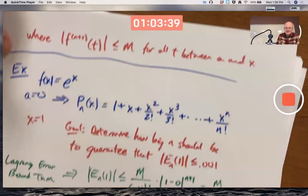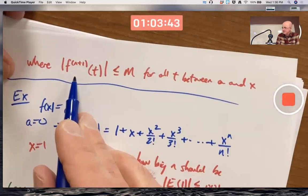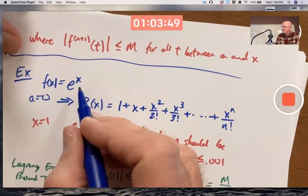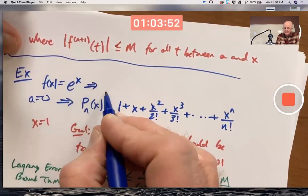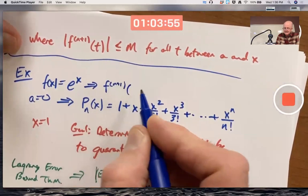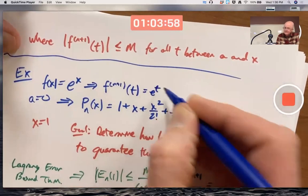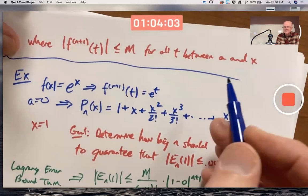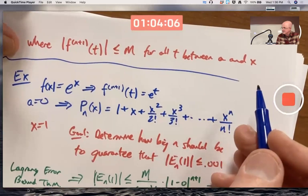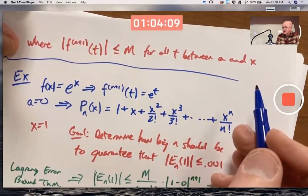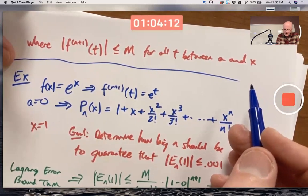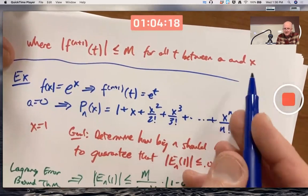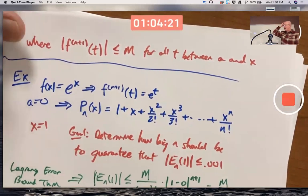M remember is an upper bound on the n plus first derivative. But wait a minute, if f of x is e to the x, then all of its derivatives are e to the x. In particular, the n plus first derivative is e to the x. And if I plug in t instead of x, it's e to the t. And I'm just doing that just to use a different letter, just because I'm thinking of a and x is fixed. Don't let it bother you. So what should I use for M? I want an upper bound on e to the t when t is between 0 and 1. A is 0, x is 1.